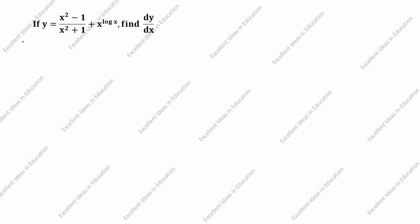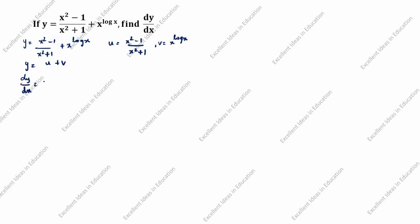What is given in this question? y is equal to x squared minus 1 divided by x squared plus 1, plus x to the power log x. We will take y equal to u plus v, where u is equal to x squared minus 1 divided by x squared plus 1, and v is equal to x to the power log x. So dy by dx is equal to du by dx plus dv by dx.